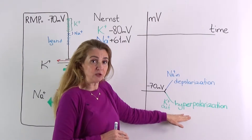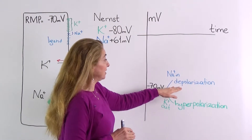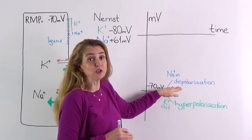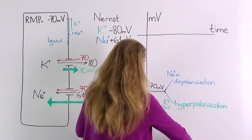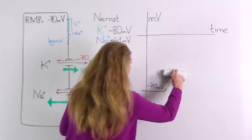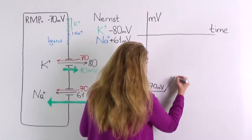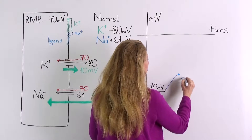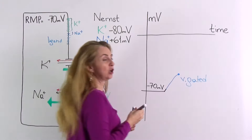The potassium movement causing hyperpolarization and sodium movement causing depolarization are both local potentials. Hyperpolarization type local potentials do not produce anything extra. But depolarization type local potentials are able to produce the next potential, which is the action potential. This depolarization for sodium, if it reaches a certain level, is going to allow the voltage-gated channels to open.